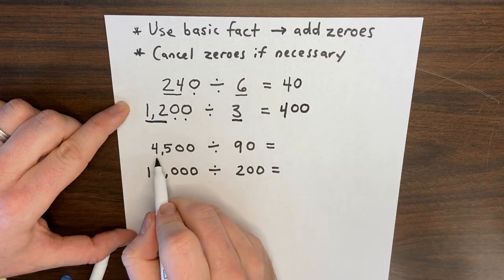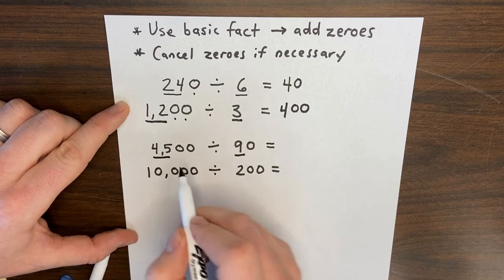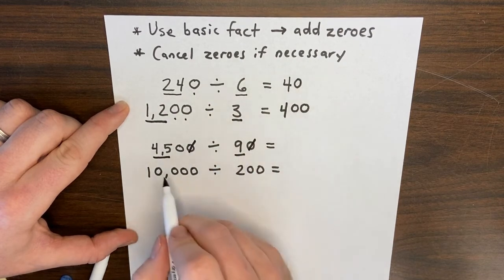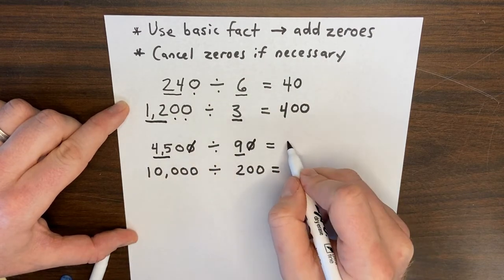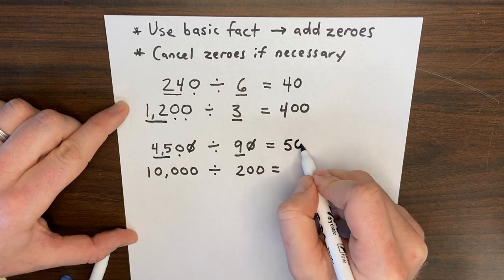Now if both numbers have zeros, we underline the basic fact and then we cancel any zeros. You have to cross out the same on each side. So after I cancel, I'll do 45 divided by 9 is 5. I have one zero left, so I have one zero in my answer.